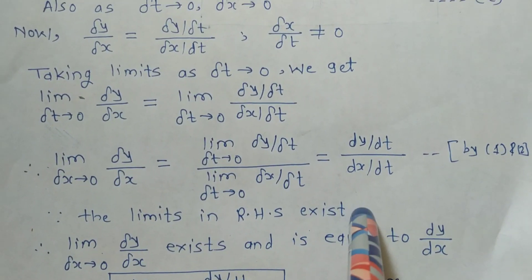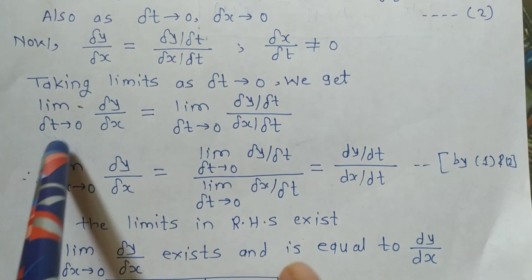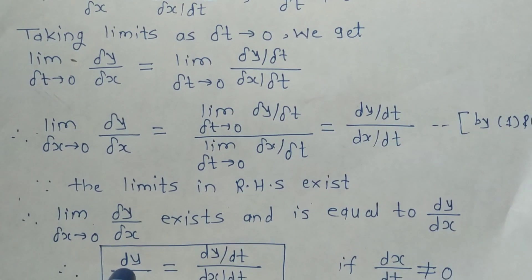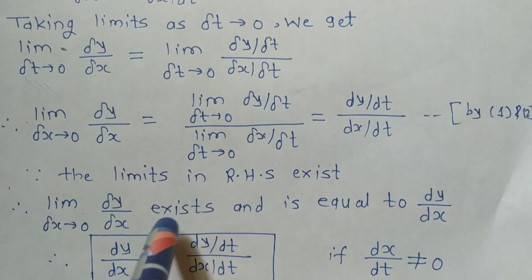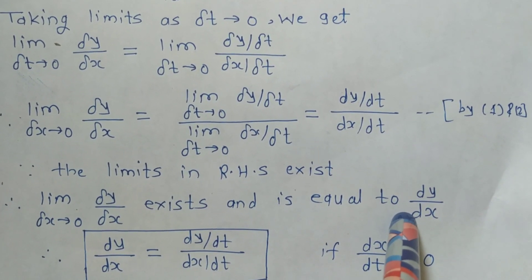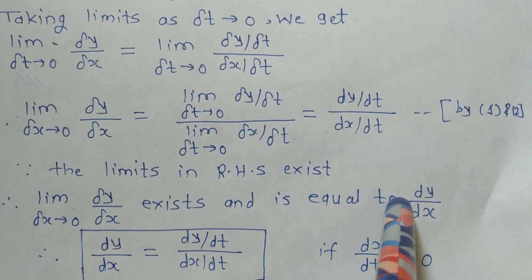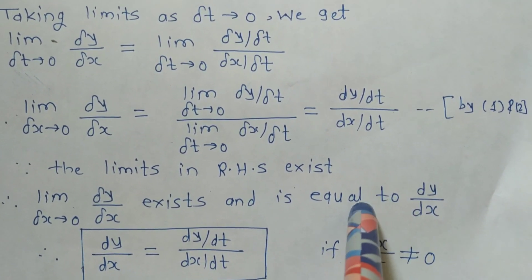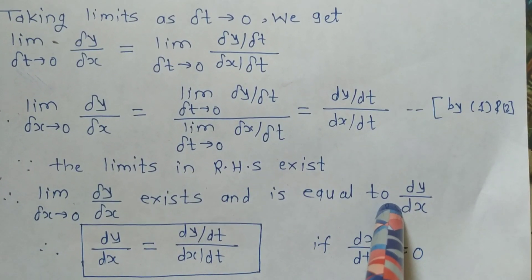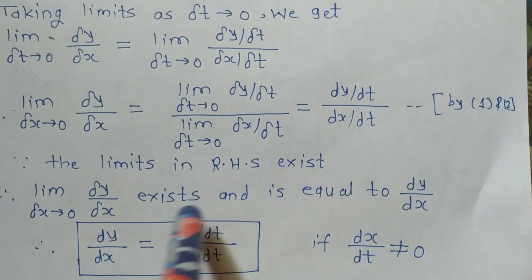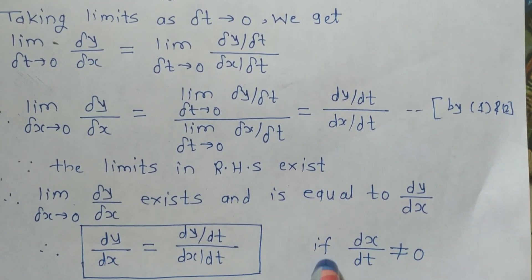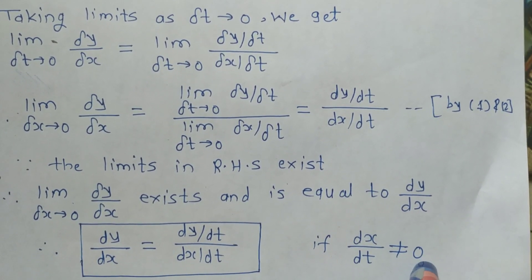Since the limits on the right-hand side exist, therefore limit as delta x tends to 0 of delta y upon delta x exists and is equal to dy upon dx. Since dy upon dx exists, therefore dy upon dx equal to dy upon dt upon dx upon dt, if dx upon dt is not equal to 0.